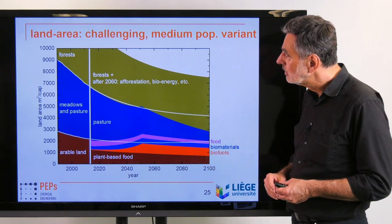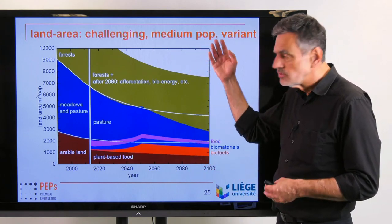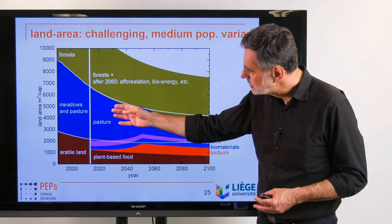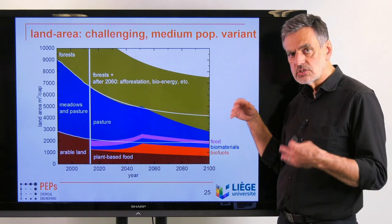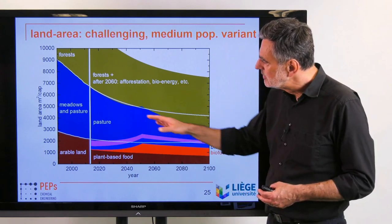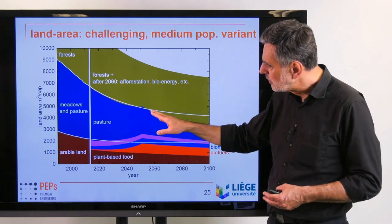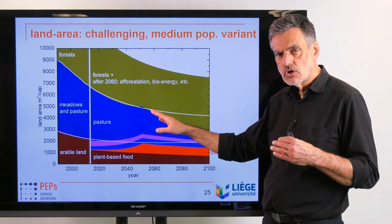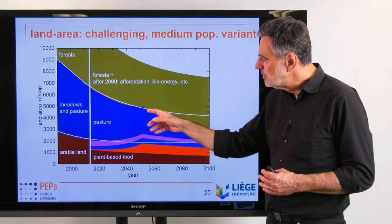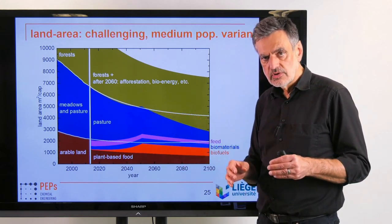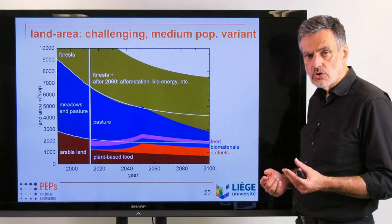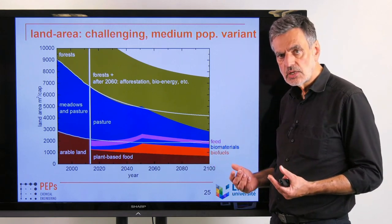We can use land area for plant-based food, biofuels, biogas, biomaterials, plastics, detergents, pharmaceuticals, feed, and pasture. When we add those requirements up, we have to cross the white line — meaning we have to cut down a significant fraction of forests, including primeval forests, to feed everybody sufficiently. Cutting down forests is of course negative.